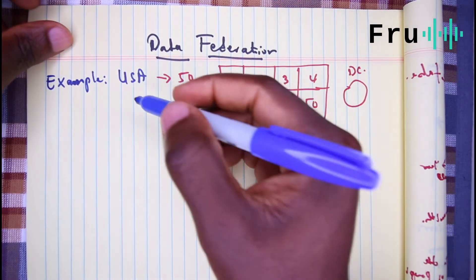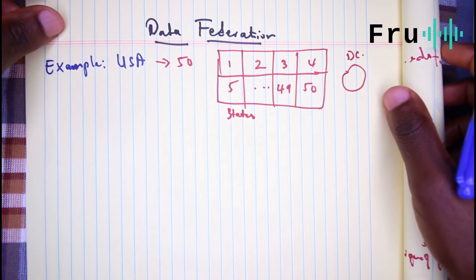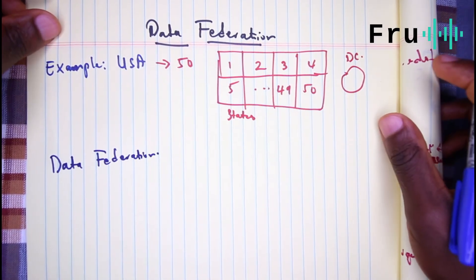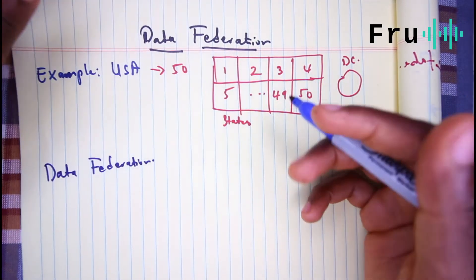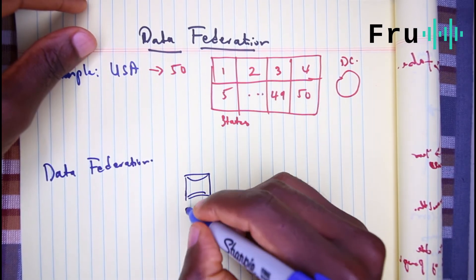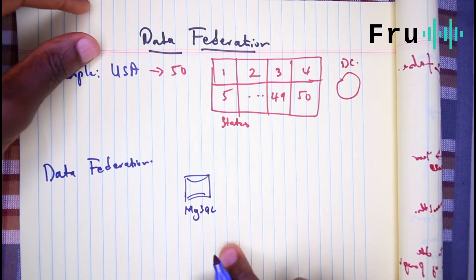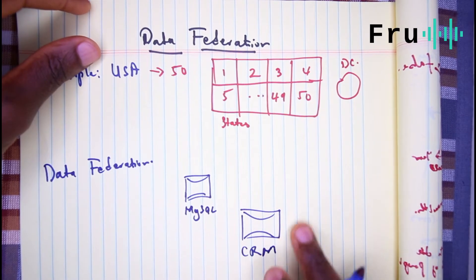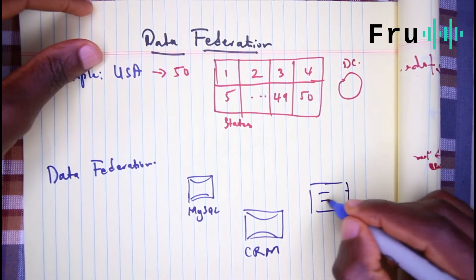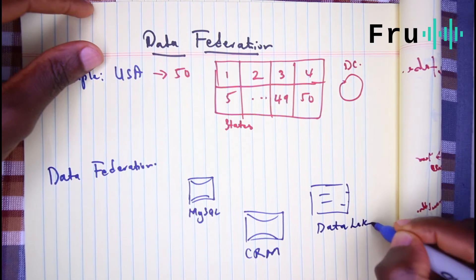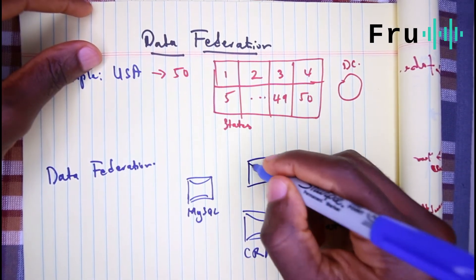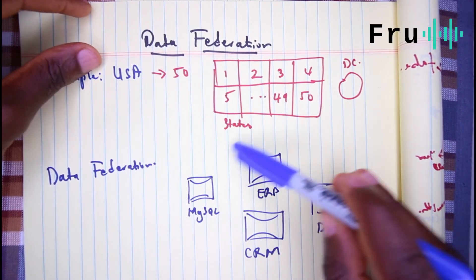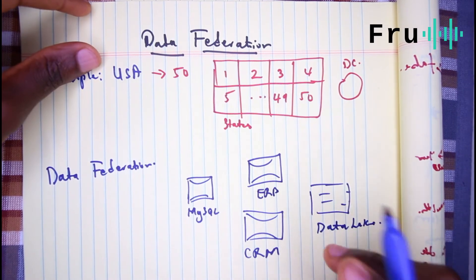So if we have that at the back of the mind where we've seen federation as it is in the United States, what does data federation then mean and where does it come in relevant for organizations. So if you think about organizations in the space of data, you might end up with a bunch of different data systems. You might have a MySQL that is running your applications. You might have a CRM system somewhere that is running on a different database. You might have some files here, which is your data lake. You might have another database here, which might be SAP, which would be your ERP system. And so you have a bunch of these different systems that organizations might end up with, either by accident or by design.